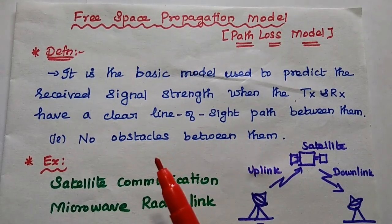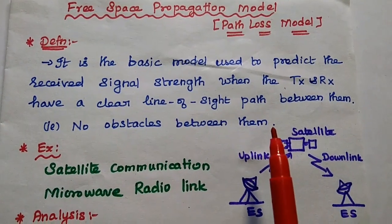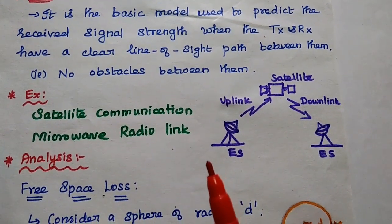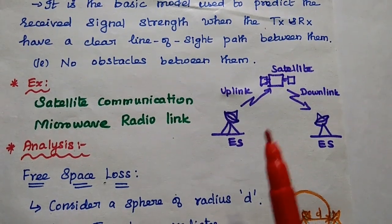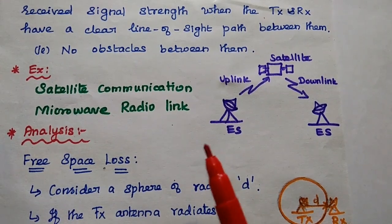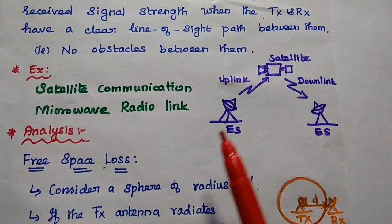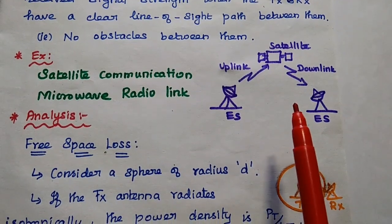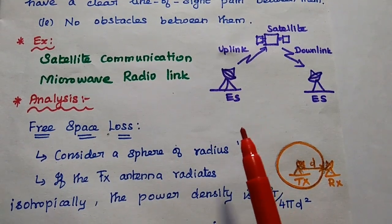Free space means it is having a clear line of sight path between transmitter and receiver — that means there are no obstacles between transmitter and receiver. For example, satellite communication and microwave radio links both have a clear line of sight path between the transmitter at the station and the satellite, with uplink and downlink communication. This is an example of a clear line of sight path in an air medium.